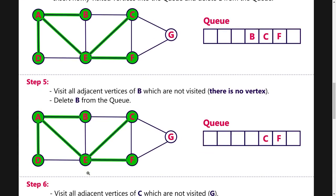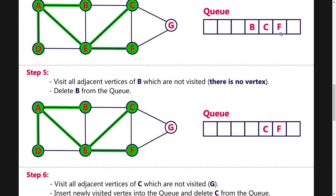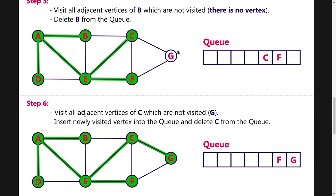Once E is deleted, B, C, and F remain in the queue. Looking at B, it has no adjacent unvisited nodes since A, E, and C have already been visited, so we delete B. Next is C, which has adjacent nodes B, E, F, and G. The first three have been visited already, but G is not visited, so we insert G into the queue and mark it as visited.